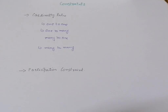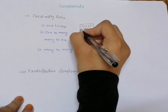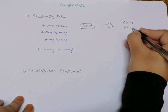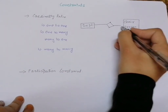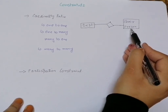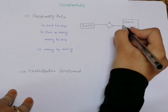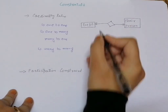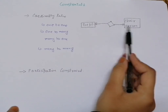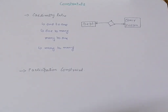For an example of one-to-one cardinality: let's say we have an entity 'department' and each department is headed by a particular chair person. Each department has only one chair person, and one chair person manages only one department. To represent this, we write symbols showing minimum one person must chair one department, and minimum one department can have one chair person — this is a one-to-one relationship.